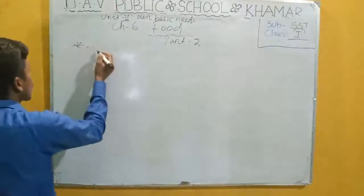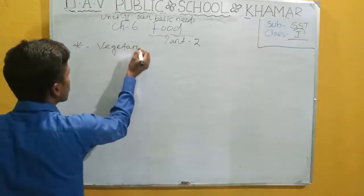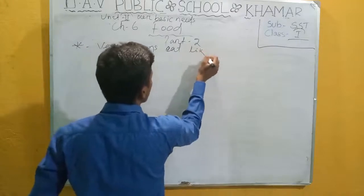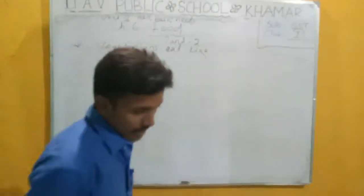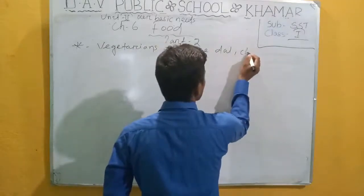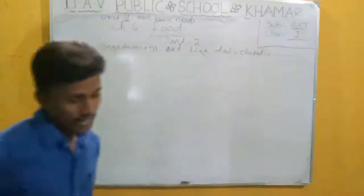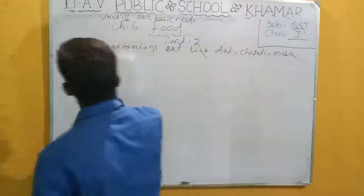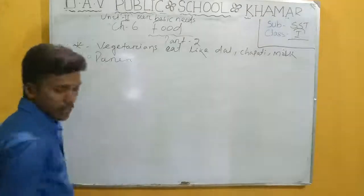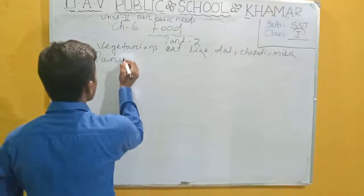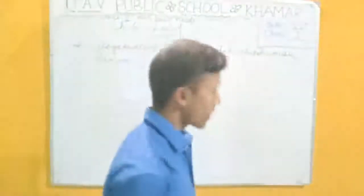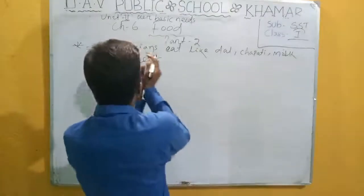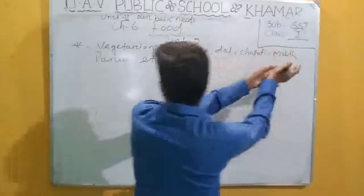Please note down: Vegetarian foods include dal, chapati, milk, paneer, etc. So this is the first category — vegetarian. The food items that vegetarians eat are dal, chapati, milk, paneer, and so on.